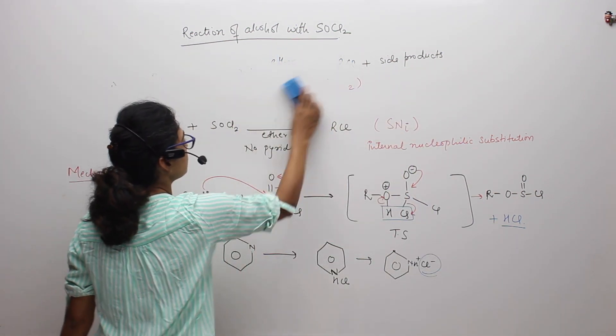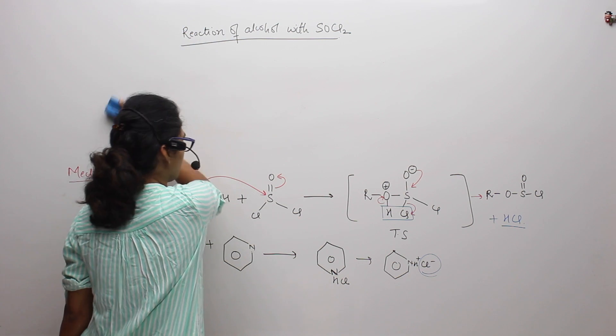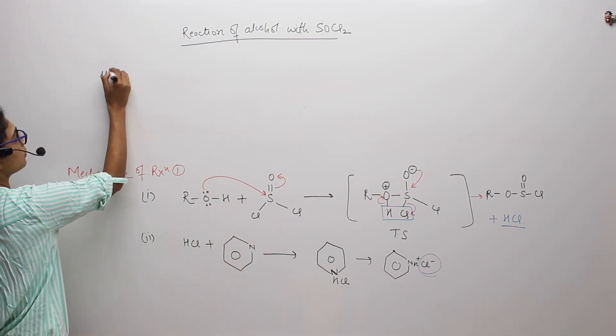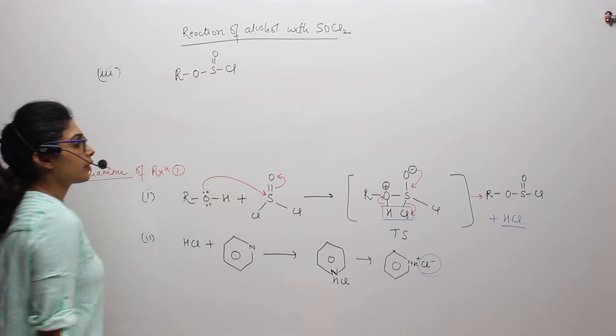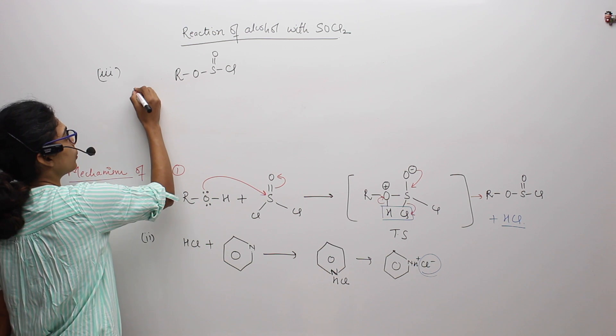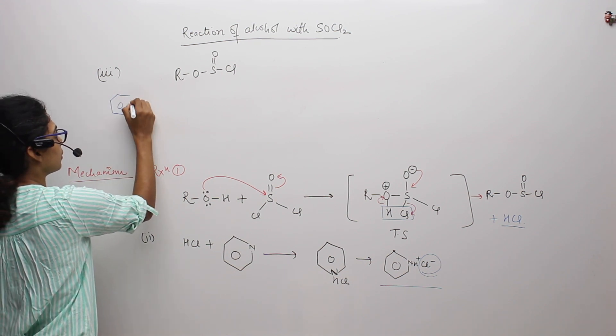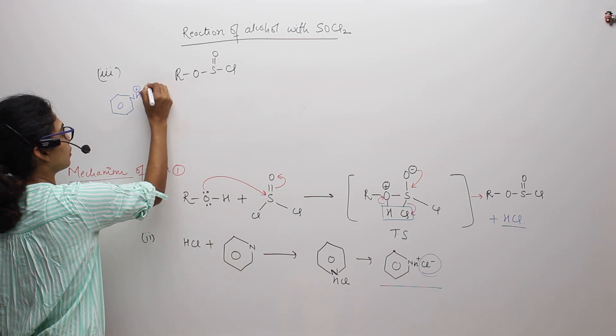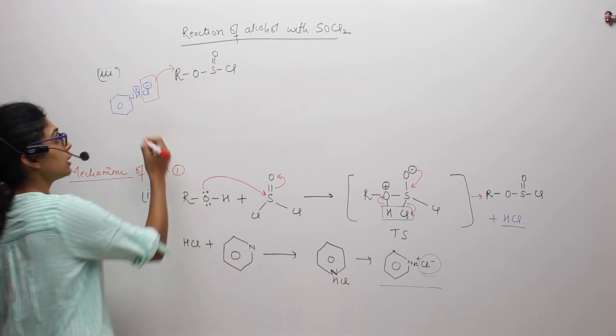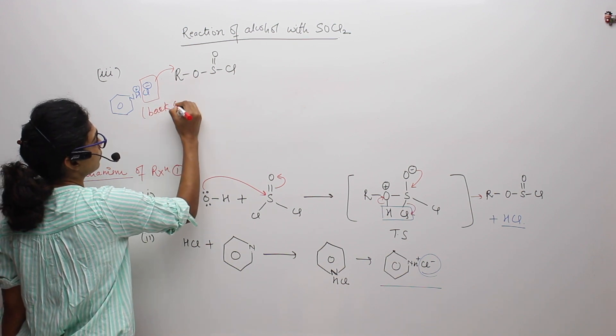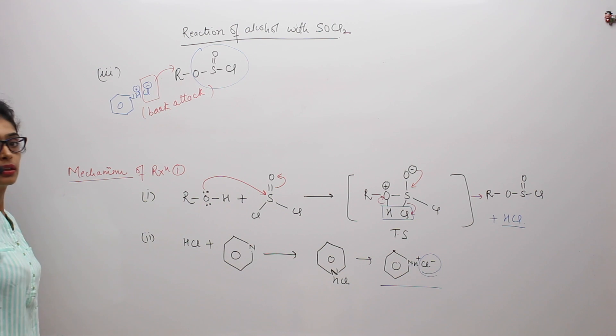Let's see the third step. In the third step of reaction, we have R-O-S double bond O-Cl. And now chlorine, the Cl minus which can get generated from this pyridine, I can write it over here. This Cl minus will attack on R, back attack, and will try to replace this leaving group.